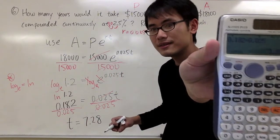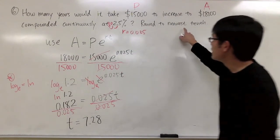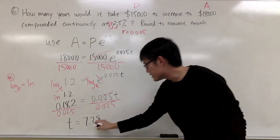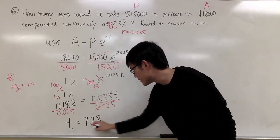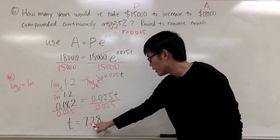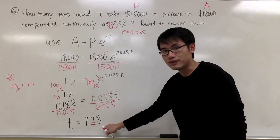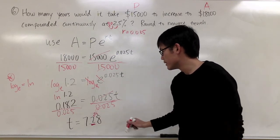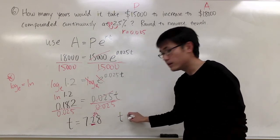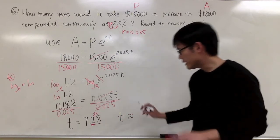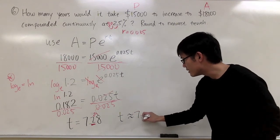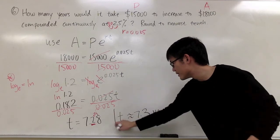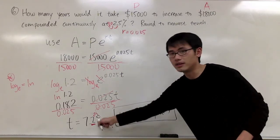But then the direction says I want to round it to the nearest tenth place, and here is the tenth place. So I have to look at the numbers to the right of this, which is the 8. That means I have to round up. So my answer, t, it's going to take about 7.3 years.